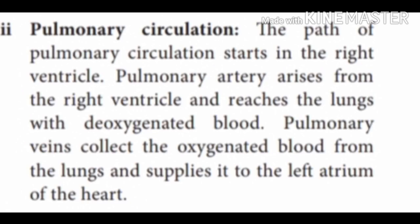Pulmonary circulation starts in the right atrium. The pulmonary artery arises from the right ventricle and reaches the lungs with deoxygenated blood. The pulmonary vein collects oxygenated blood from the lungs back to the left atrium. This is called pulmonary circulation.